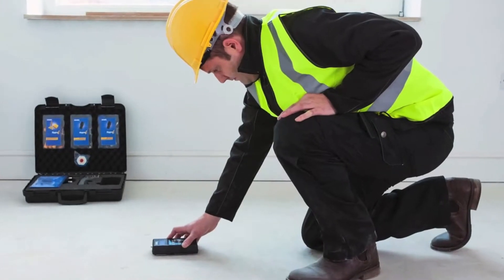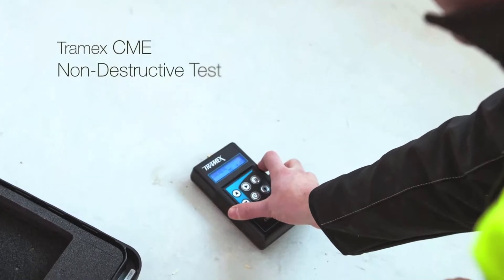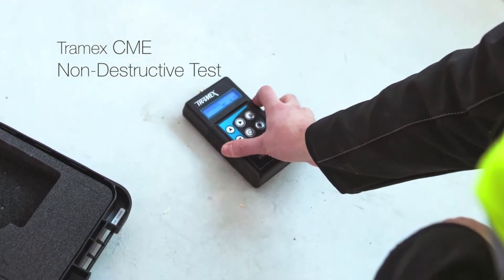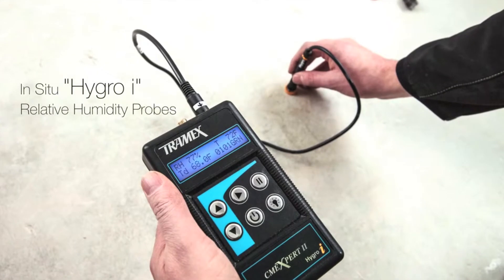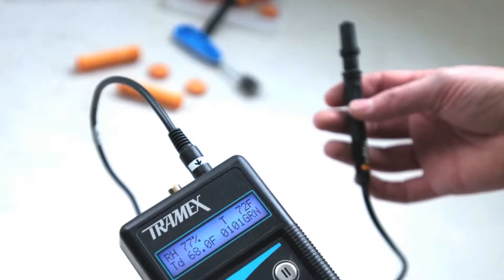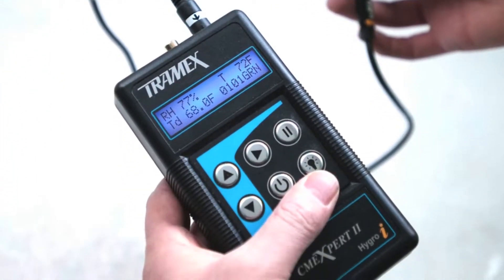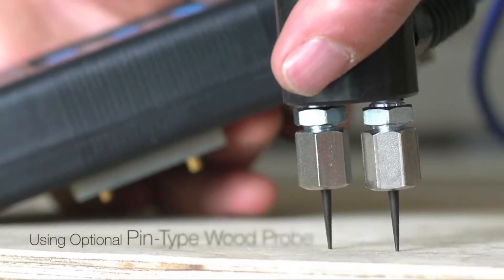The system involves testing the subfloor using both the Tramex CME Non-Destructive Test and In-Situ Relative Humidity Hygroi probes. The ambient conditions of the building are also measured and the moisture condition of many floor coverings can be checked.